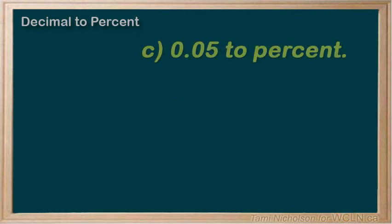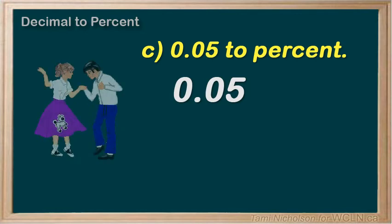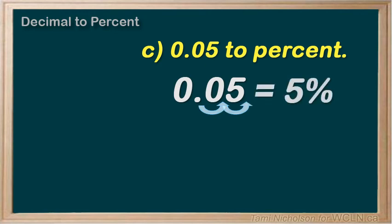Here we have 0.05. Same steps — multiply by 100, do your percent POCA. Move the decimal point two spaces to the right, and 0.05 turns to 5. Add the percent sign. Voila! You have 5 percent.